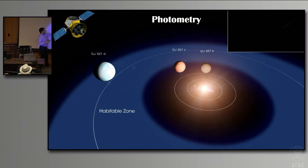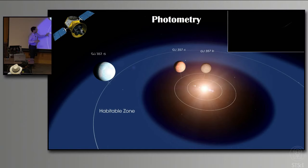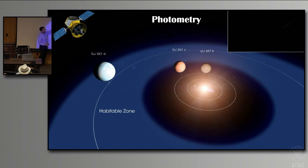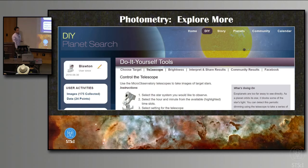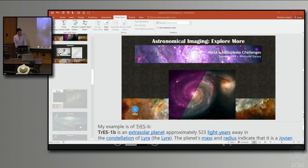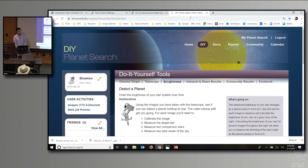These planets around GJ 357 are all super-Earth size. GJ 357b is too close to the star to be habitable, but GJ 357d sits in the habitable zone — about six times Earth's mass, a super-Earth that follow-up missions will need to study for habitability. Photometry is something you can actually do yourself with an online tool called the DIY Planet Search. I'll give you one URL at the end where you can find everything.